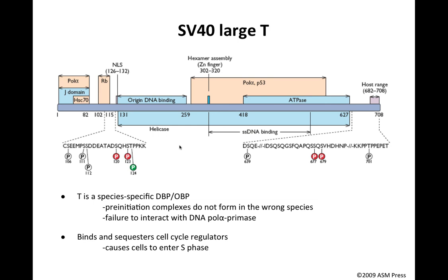We know from our discussion that large T is an origin binding protein, and here is the region of SV40 large T involved in binding to the origin of replication. But look at all the other domains of this protein. For example, we know that the T protein helps to recruit polymerase alpha to DNA — polymerase alpha is involved in making the early primers of DNA replication. SV40 large T interacts with polymerase alpha in two specific regions; these are the important amino acids involved in that interaction.